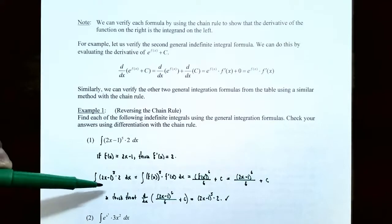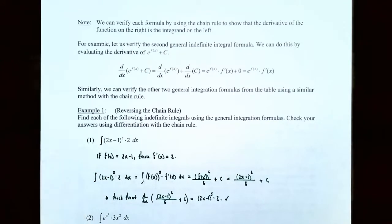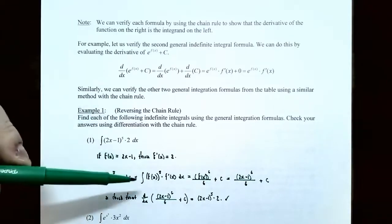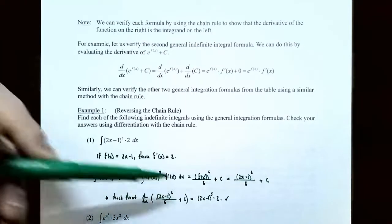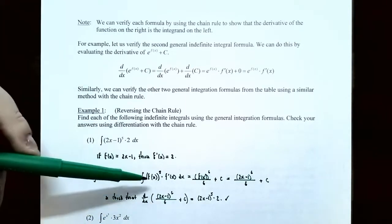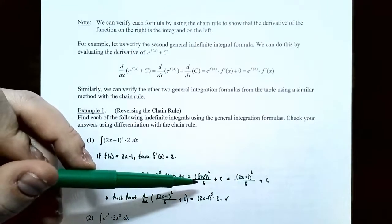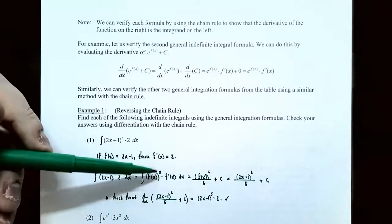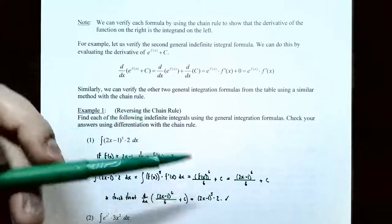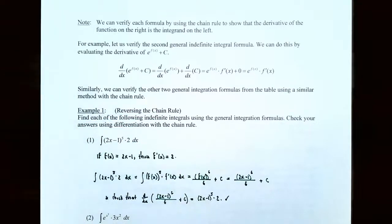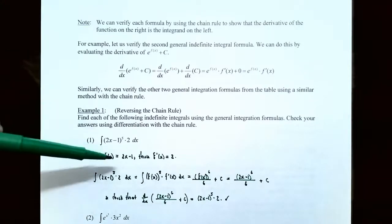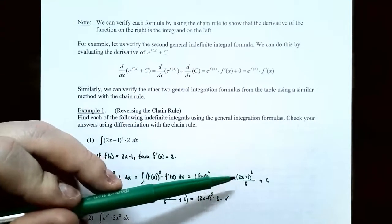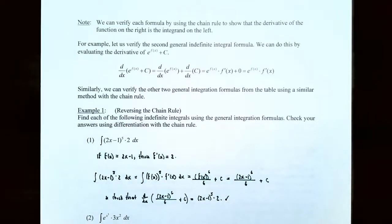The integral of the quantity 2x minus 1 to the fifth power times 2 dx — let's replace this with f of x as 2x minus 1. So you have the integral of f of x raised to the fifth power times 2, which is f prime of x, and keep the dx. Now use the power rule: keep the inside function f of x, add 1 to the exponent, and also divide by the new exponent. So it was 5, now it's the 6th power on f of x, divided by 6, and don't forget the plus c for the constant of integration. Now replace f of x with what it was originally — 2x minus 1 — so you get 2x minus 1 to the sixth power divided by 6 plus c.